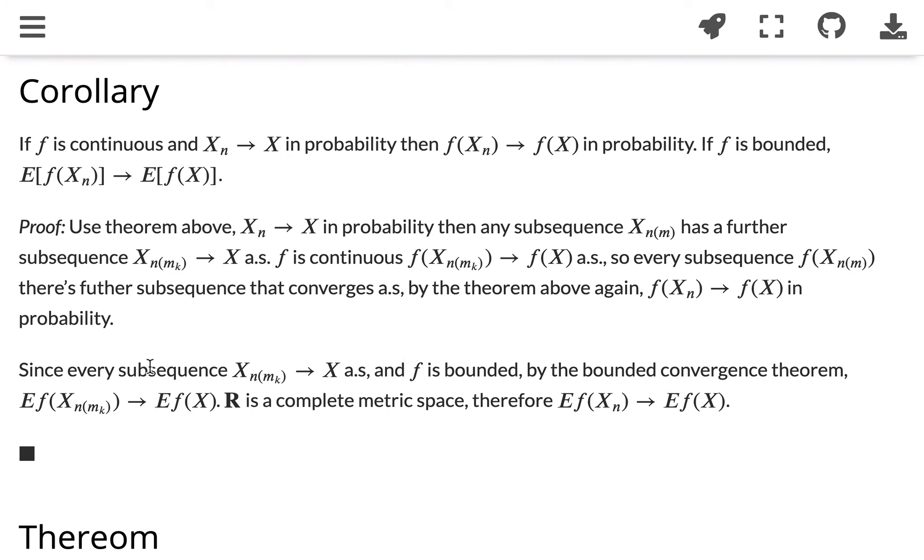And since every subsequence x_m_k converged to x almost surely, and f is bounded, by the bounded convergence theorem, we know that expected value of f(x_n_m_k) converged to f(x). And R is a complete metric space, so we know that f(x_n) minus x_m converged to f(x).